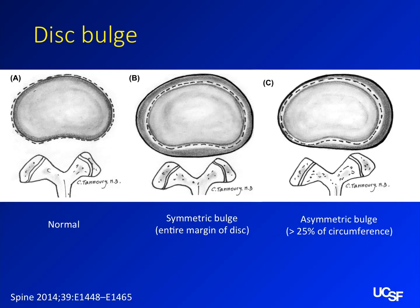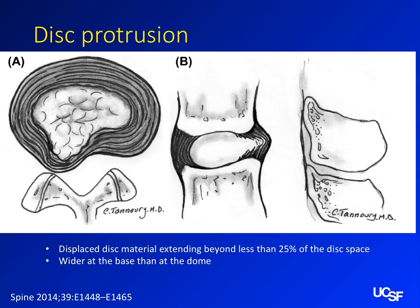All of these pictures are from that same paper. On the left it's normal, and once it starts to extend beyond those boundaries it becomes a bulge. They divide bulges between symmetric — the whole thing is just bulging out in every direction — and asymmetric, where it's larger on one side. For it to still be a bulge, it needs to be more than 25 percent of the circumference. Once you get less than 25 percent, you start using the term protrusion, which refers to a smaller bulge that takes up less space.